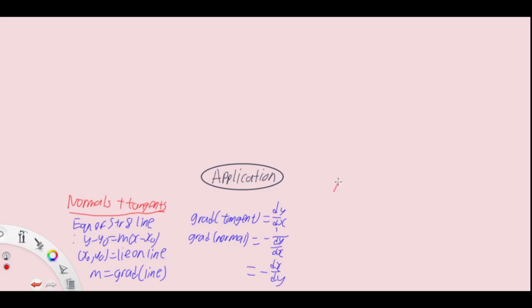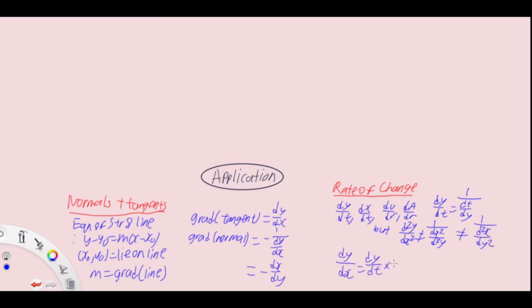Moving on to rate of change. Some examples: dy dt, dx dt, dv dr, and da dr. For any first derivative, dy dt for example equals 1 over dt dy, but any further derivative such as d2y dx2 is not 1 over dx2 d2y nor is it 1 over d2x dy2. dy dx equals dy dt times dt dx equals dy dt divided by dx dt as your connected rate of change.